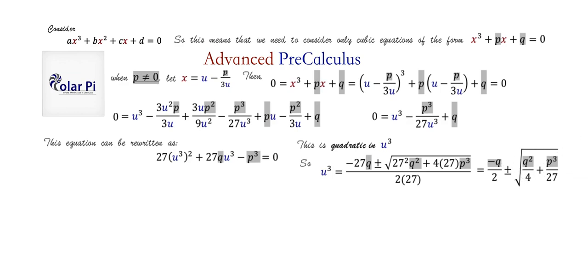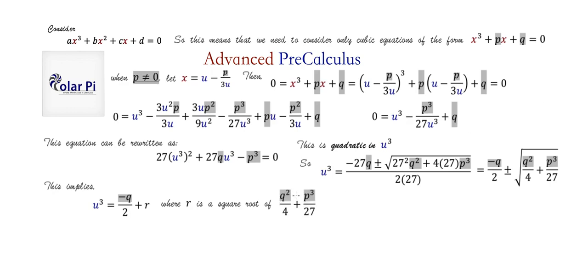Notice that u³ is of the form -q/2 + r, where r is the square root of the discriminant expression. The ± sign comes from r being both the positive and negative square root — so r represents both. That is why we write just +r, with r itself carrying the ± meaning.